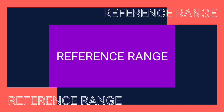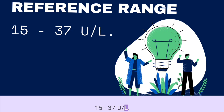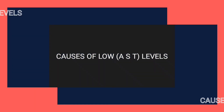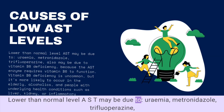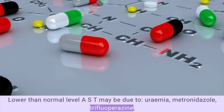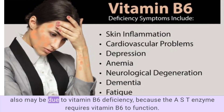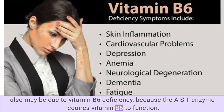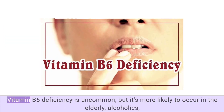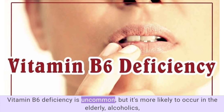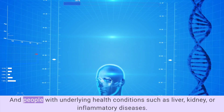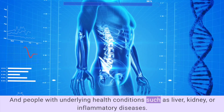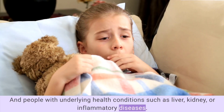The reference range for AST is 15–37 U/L. Causes of low AST levels include uremia, metronidazole, and trifluoperazine. Low AST may also be due to vitamin B6 deficiency, because the AST enzyme requires vitamin B6 to function. Vitamin B6 deficiency is uncommon but more likely to occur in the elderly, alcoholics, and people with underlying health conditions such as liver, kidney, or inflammatory diseases.